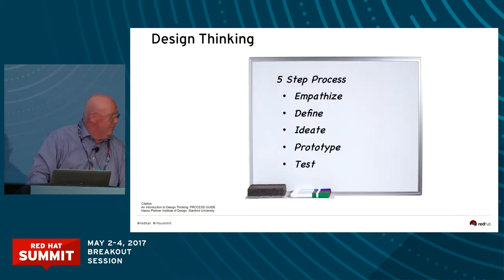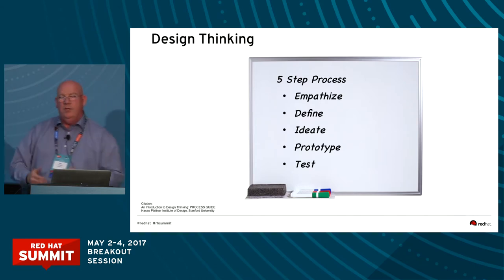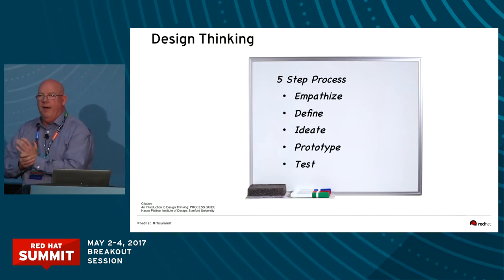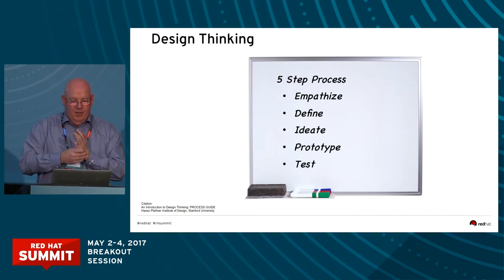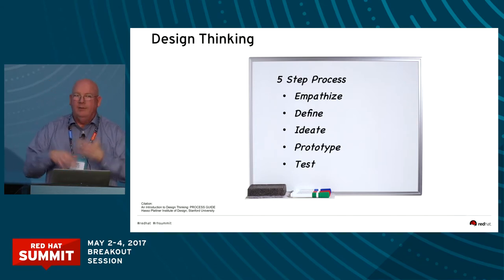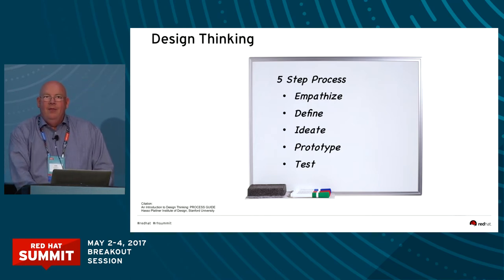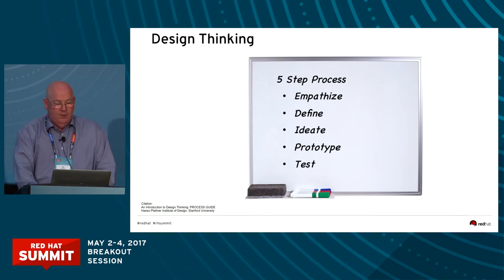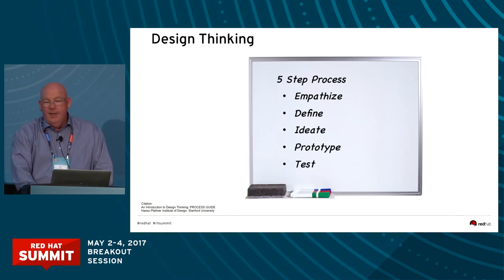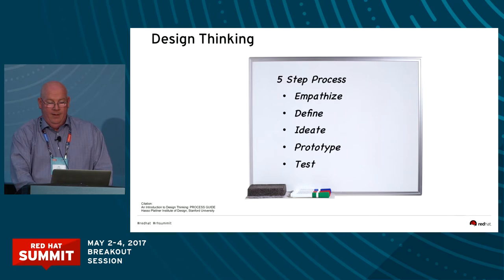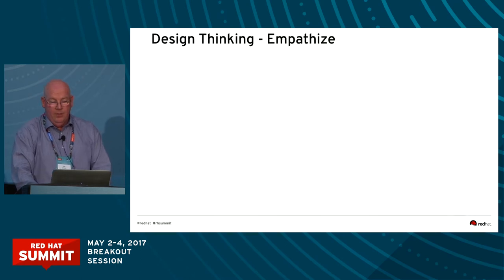What is it you do? It's actually a five-step process — kind of like AA, but you'll come up with better UI. There are five things: Empathize, Define, Ideate, Prototype, and Testing. I'm going to go through those real quick.